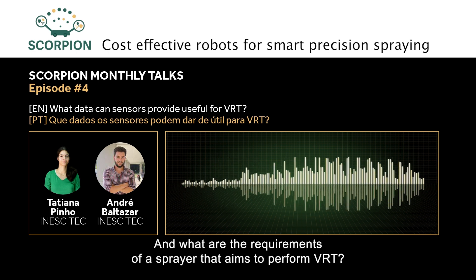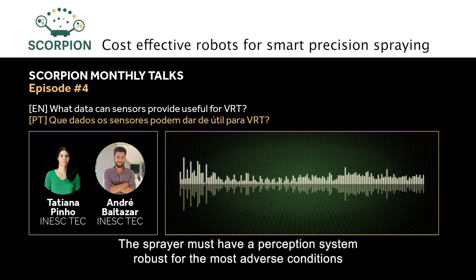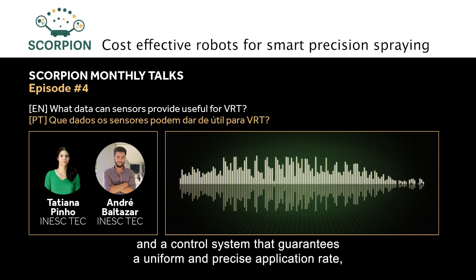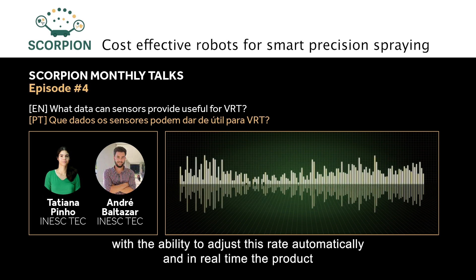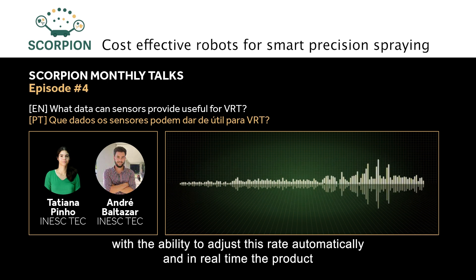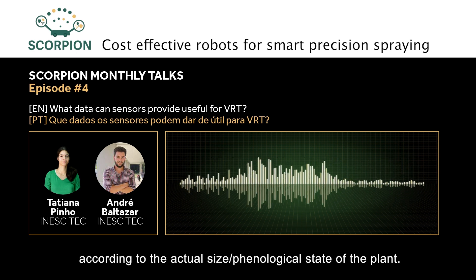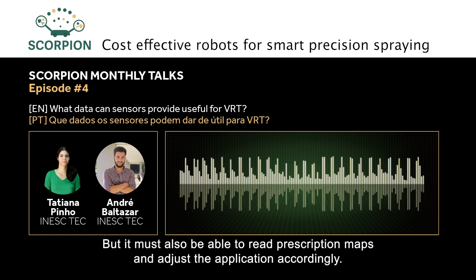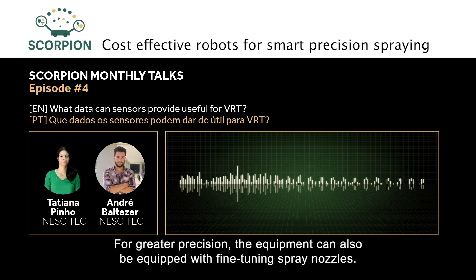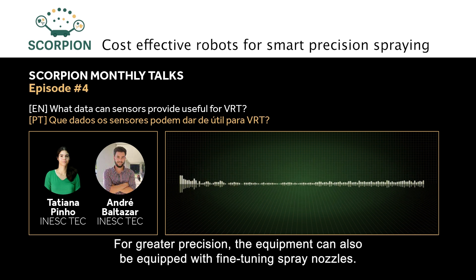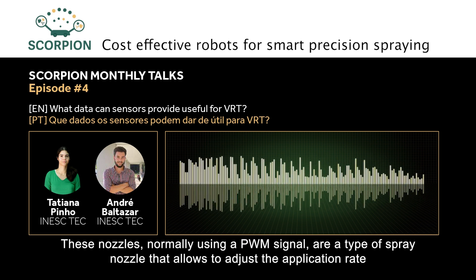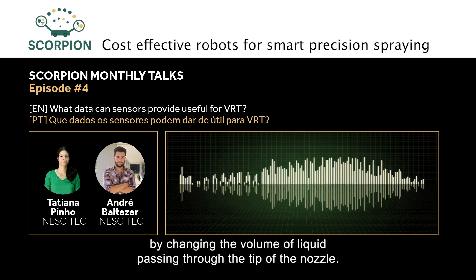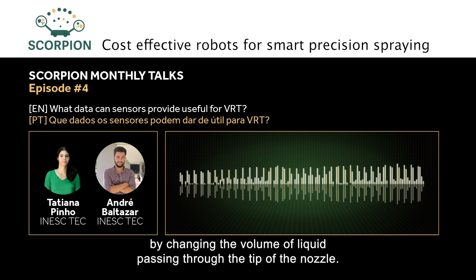And what are the requirements of a sprayer that aims to perform VRT? The sprayer must have a perception system robust to adverse conditions and a control system that ensures a uniform and precise application rate, with the ability to automatically adjust this rate in real time according to the actual dimensions and phenological state of the plant. It must also be capable of reading prescription maps and adjusting the application accordingly. For greater precision, the equipment can also be equipped with fine-adjustment spray nozzles, which — typically using a PWM signal — allow the application rate to be adjusted by altering the volume of liquid passing through the nozzle tip.